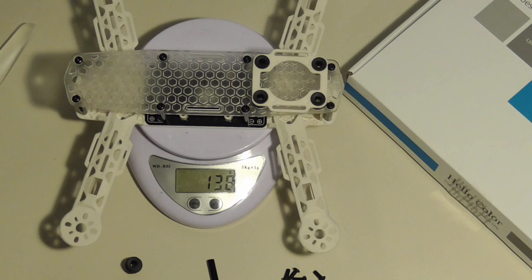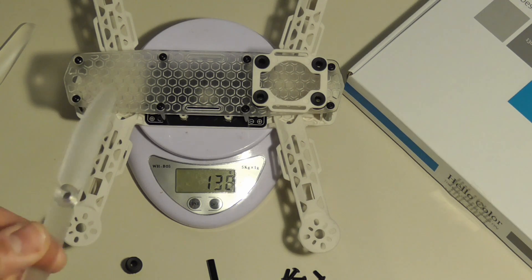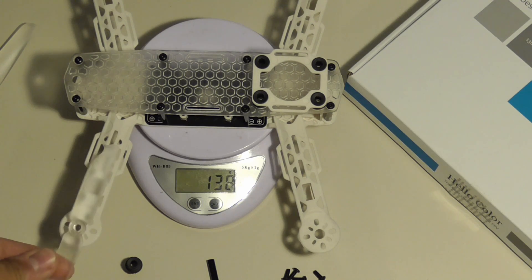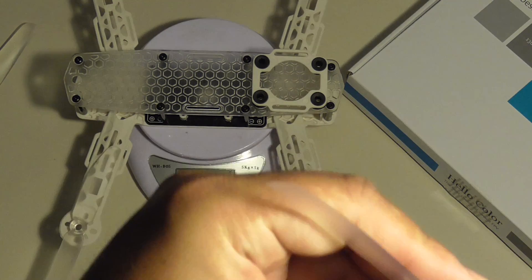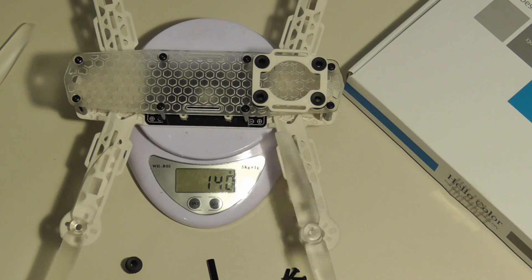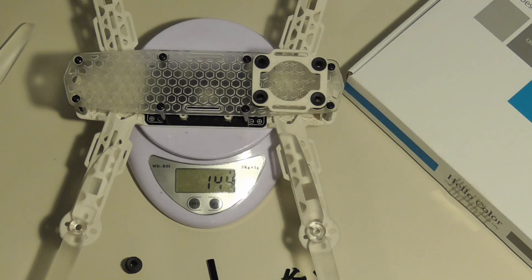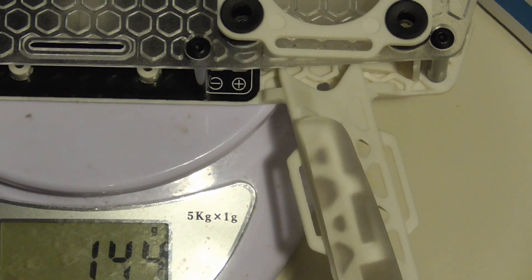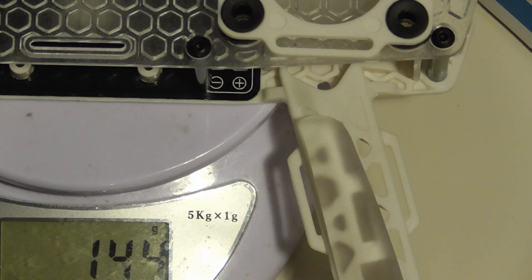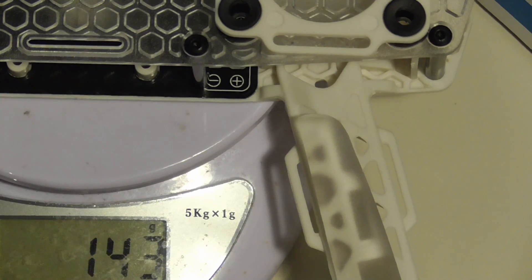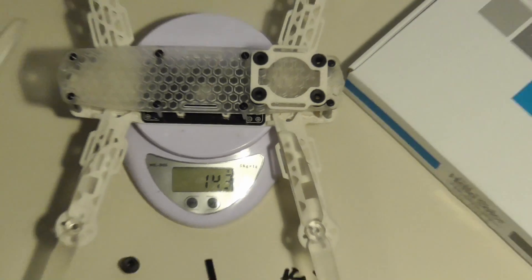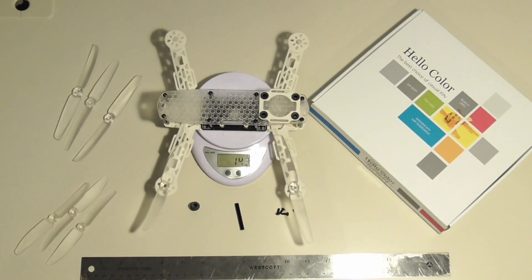Now to give you an idea of the prop spacing, here is the 5 inch prop, roughly centered on the motor shaft location. And here is the 6 inch prop. There is about a quarter inch to half inch spacing between the blade tip and the side of the frame. Definitely enough for a 6 inch prop.